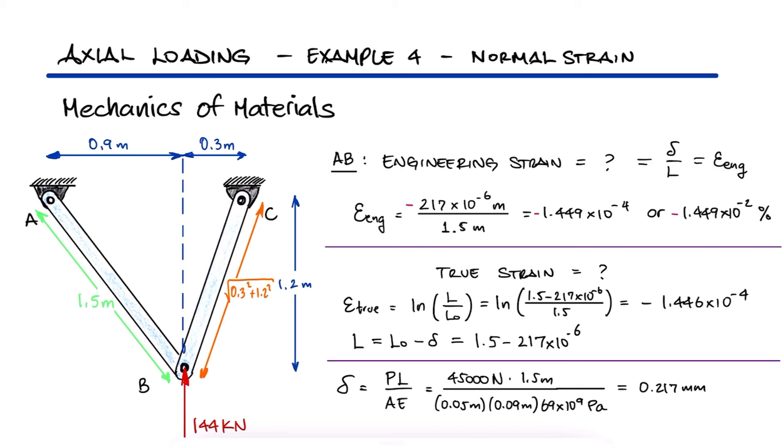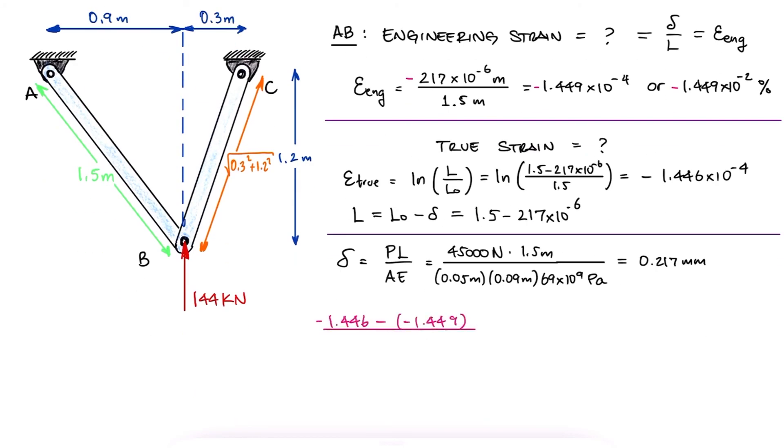It's worth pointing out that the reason for the two strains to be roughly 0.21% apart is because the stress was low, especially when compared to the yield strength, so of course the deformation and the strain were also very low. As the strain increases, the difference between true and engineering strain will be more pronounced.